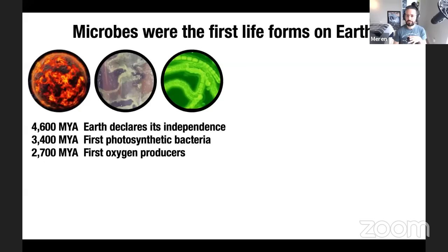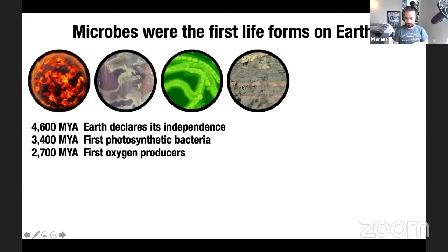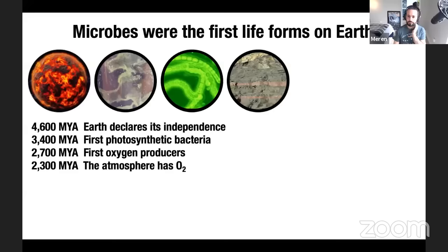These microbes started generating oxygen through photosynthesis, but oxygen did not immediately accumulate in the atmosphere because it was chemically captured by other elements — for instance, dissolved iron. When iron oxidized with oxygen it sank to the bottom of oceans, forming remarkable layers in rock formations. We can now look at these rock formations to learn about the evolution of the atmosphere's chemistry — this is how we know about the Great Oxygenation Event.